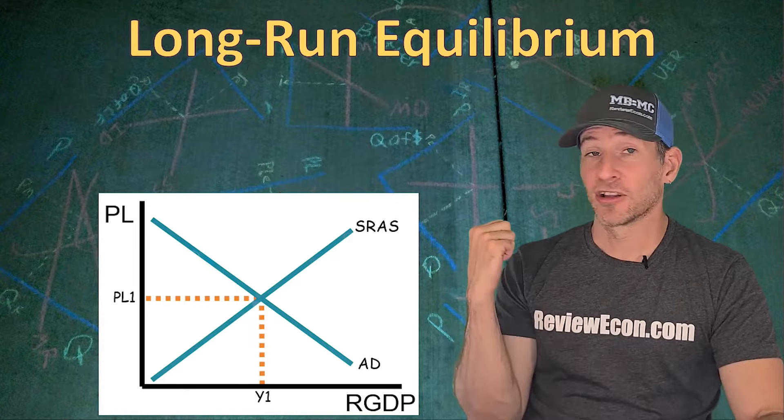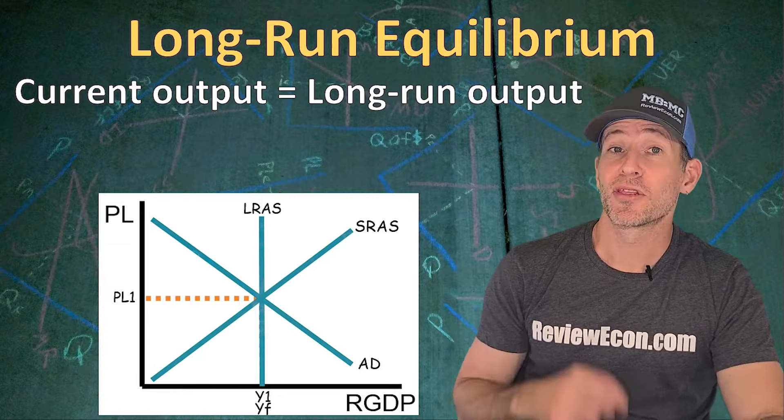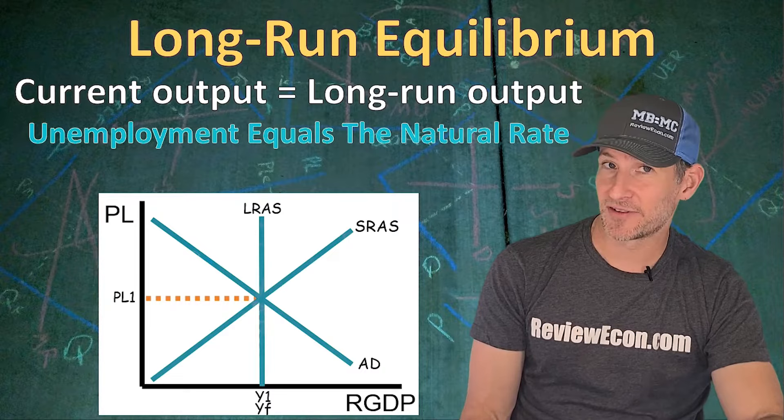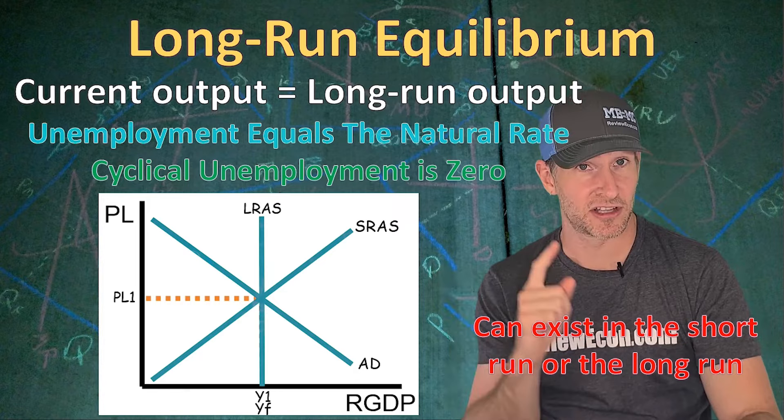When the economy is said to be at long run equilibrium, the long run aggregate supply curve will pass through the intersection between the short run aggregate supply curve and the aggregate demand curve. The long run potential output equals the current equilibrium output, labeled both Y1 and YF. When we are at long run equilibrium, the current rate of unemployment equals the natural rate of unemployment and cyclical unemployment is zero. Note that this is called long run equilibrium, but it can exist in the short run or the long run. In a future video, we will see how we get to this long run equilibrium from a recessionary gap or an inflationary gap when there is no government intervention.